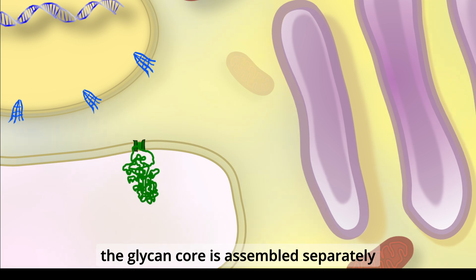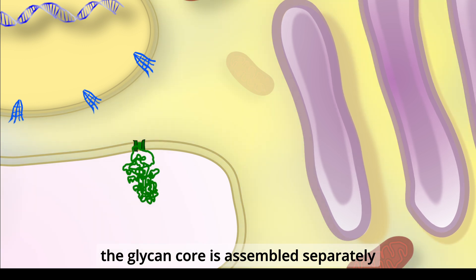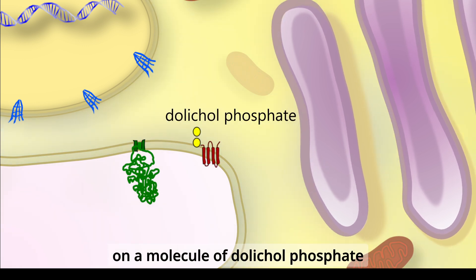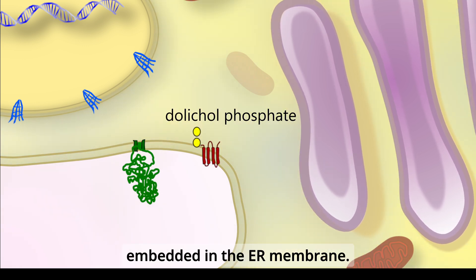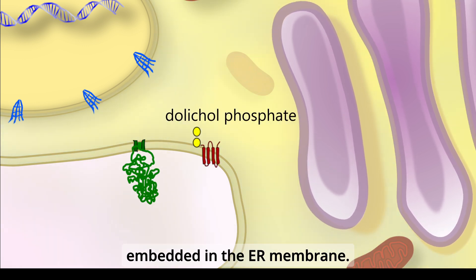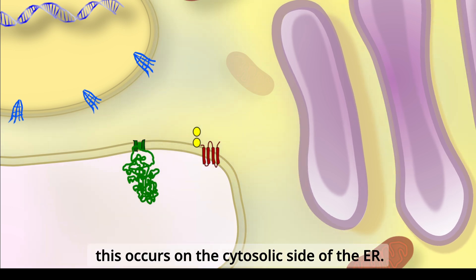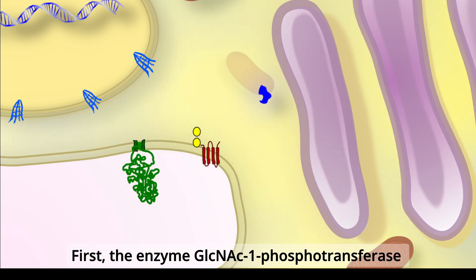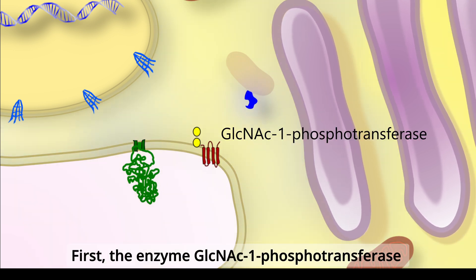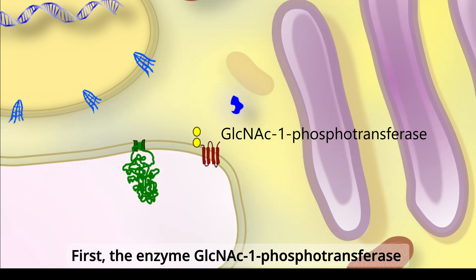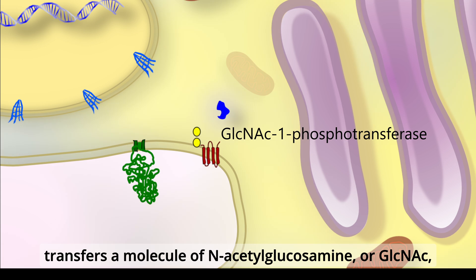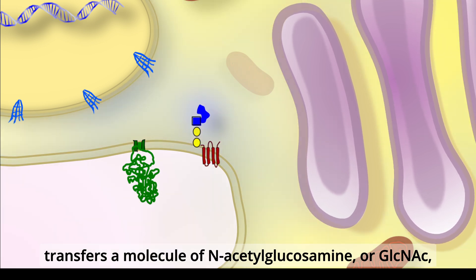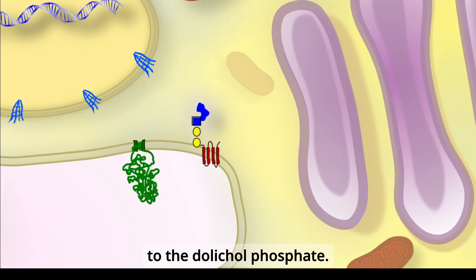At the same time, the glycan core is assembled separately on a molecule of dolichol phosphate embedded in the ER membrane. Importantly, this occurs on the cytosolic side of the ER. First, the enzyme GlcNAc-1-phosphotransferase transfers a molecule of N-acetylglucosamine, or GlcNAc, to the dolichol phosphate.